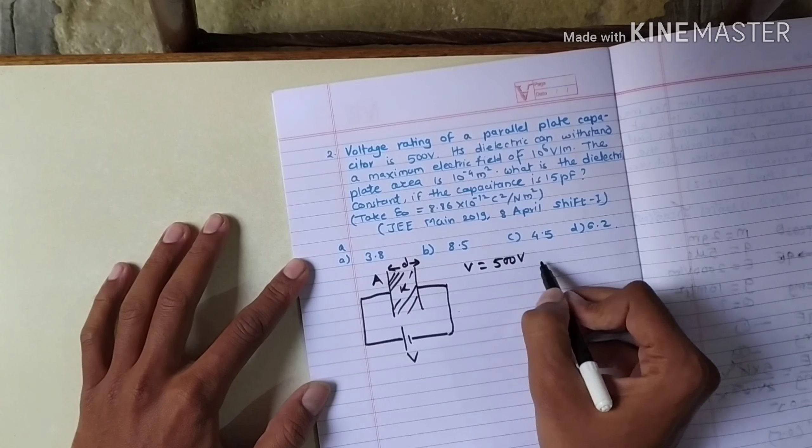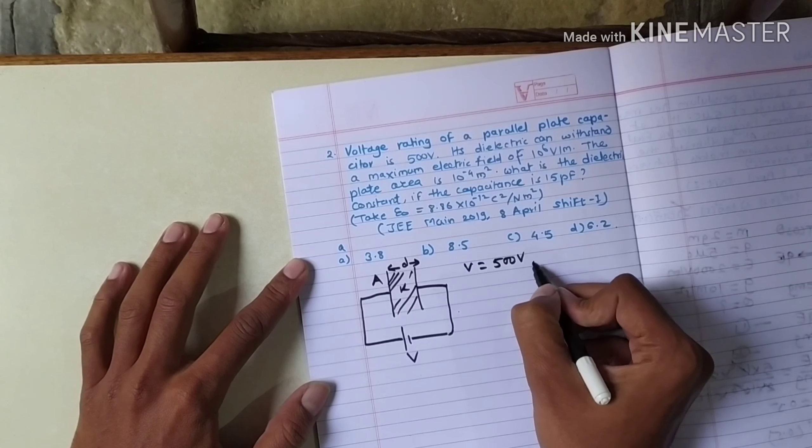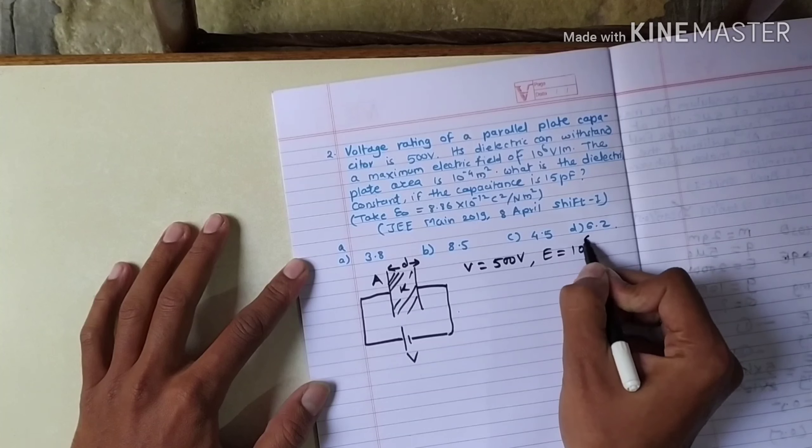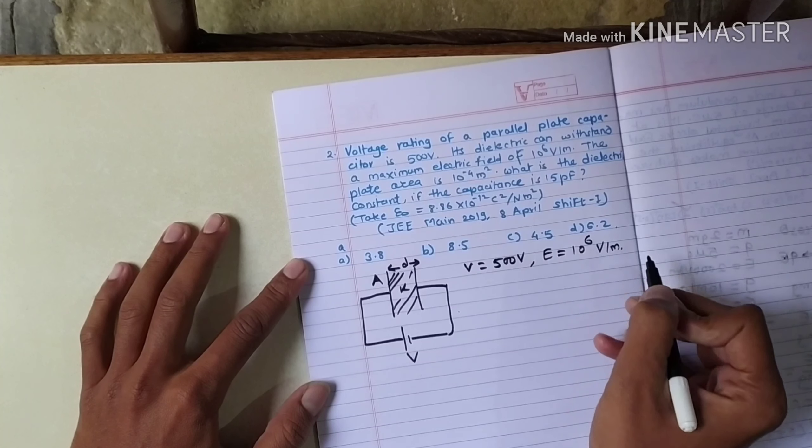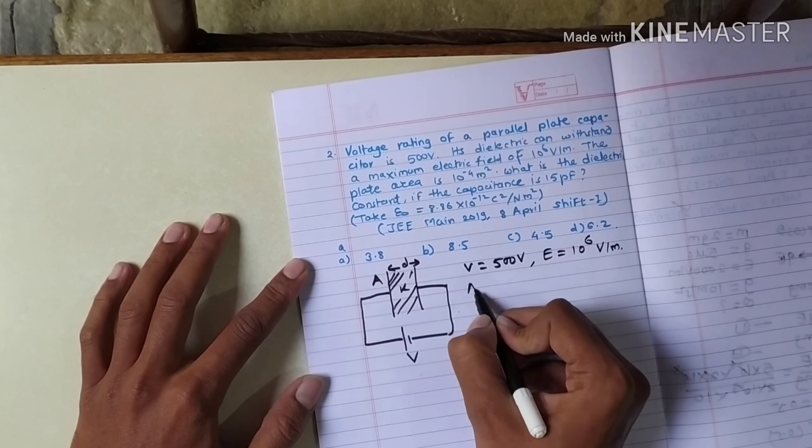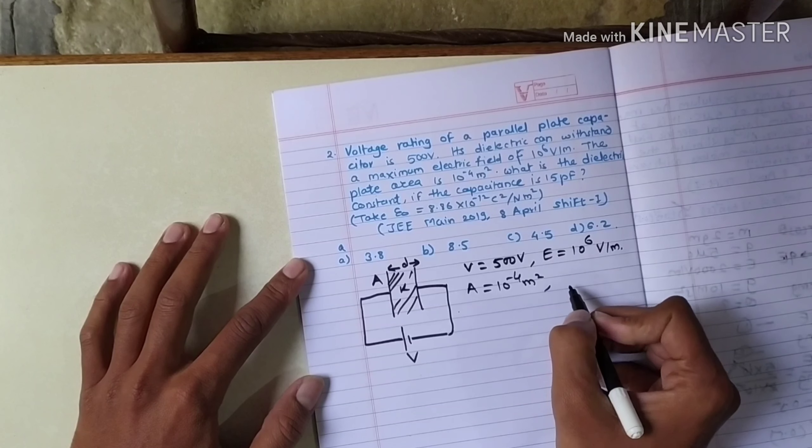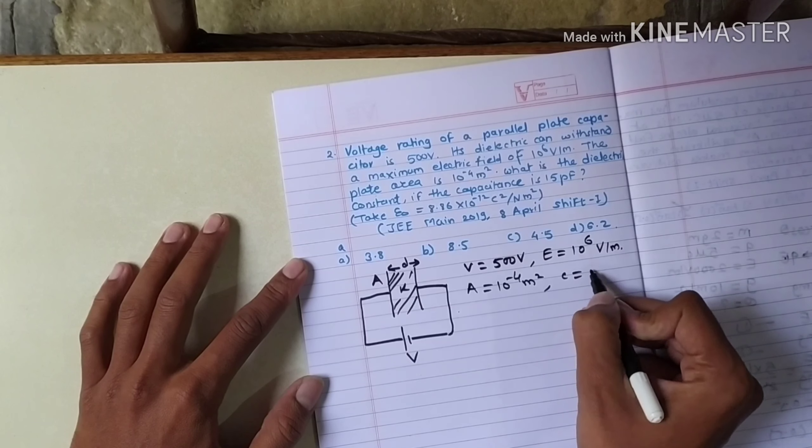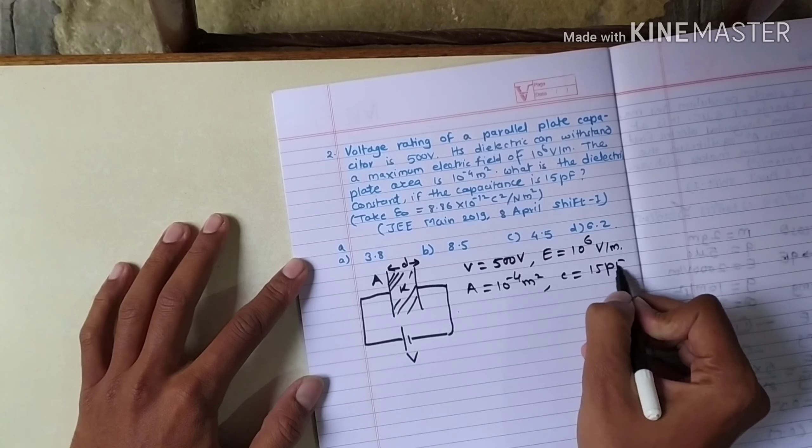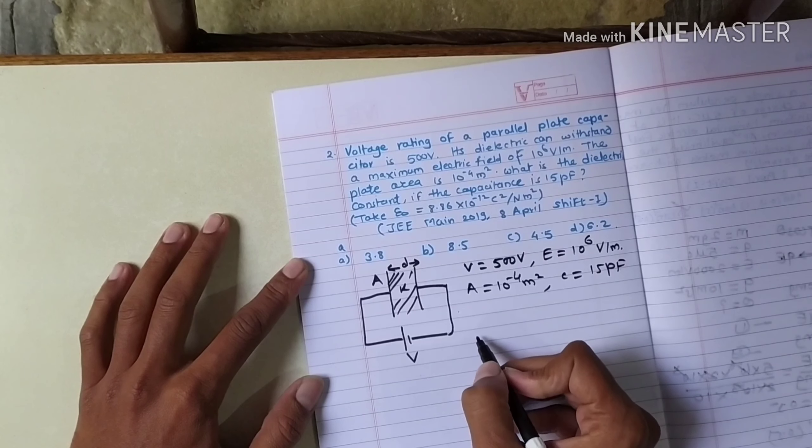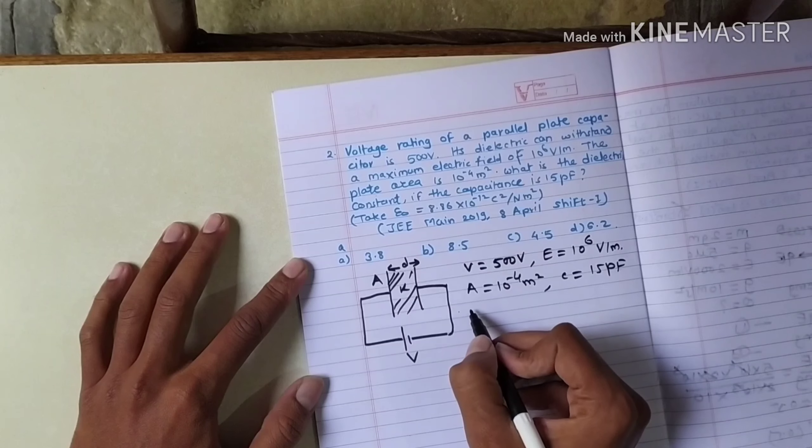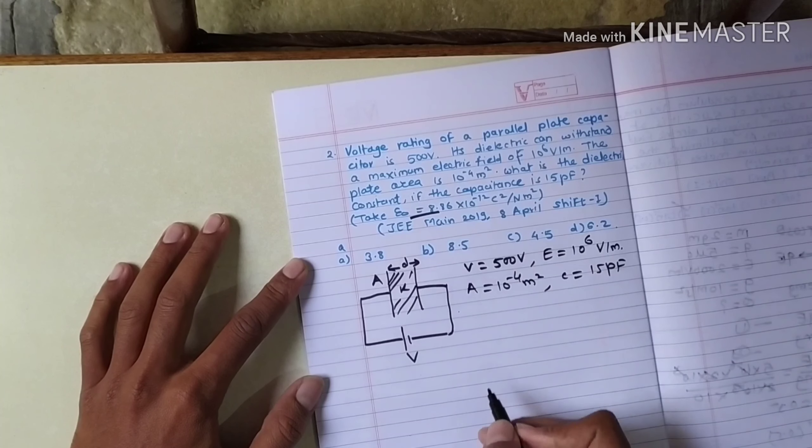The potential difference between the plates is 500 volts. The electric field is 10 raised to 6 volts per meter. Area of the plates is 10 raised to minus 4 meter square. And the capacity of the condenser is 15 picofarads, which is 10 raised to minus 12. And epsilon zero permittivity of vacuum is also given in the question.